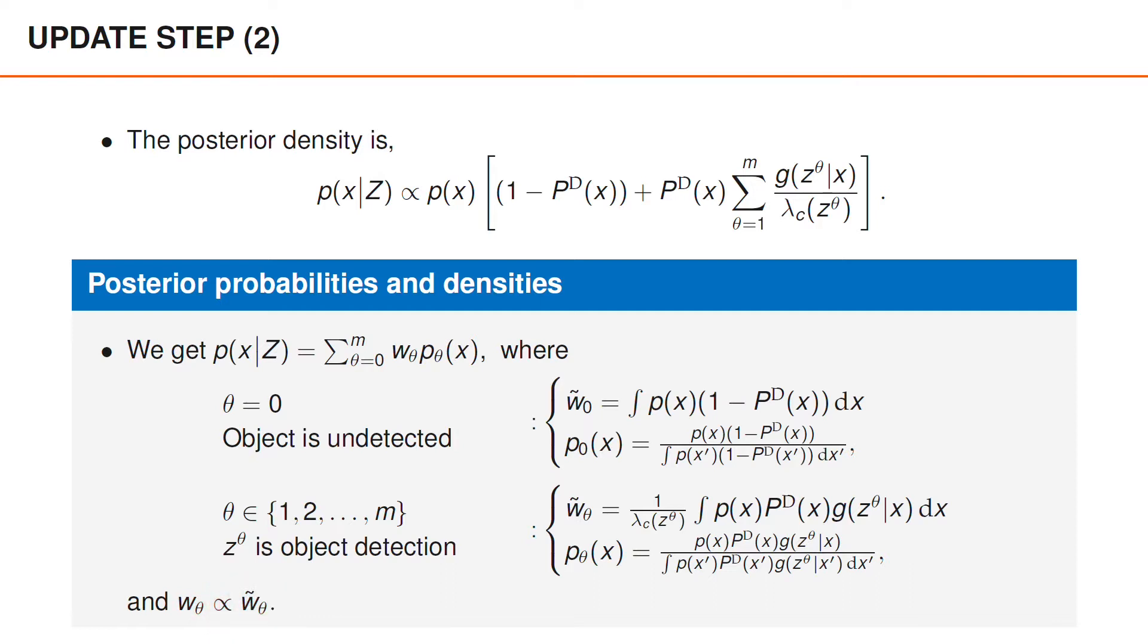In the next video, we study the expressions for both the weights and the densities and check how they simplify when we have a constant P^D and a linear Gaussian object measurement likelihood. However, even before that, it may be interesting to compare the densities p_θ(x) to the posterior density when we directly observe the object measurement matrix O.